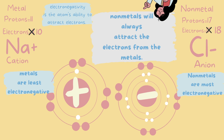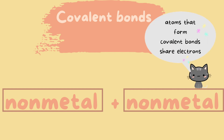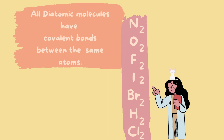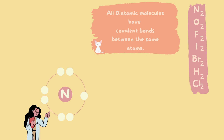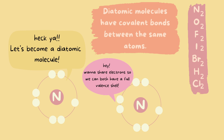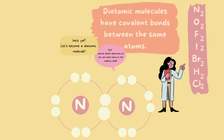Now let's move on to covalent bonds. Here we work with two non-metals bonding together. Atoms that form covalent bonds share electrons — there is no transferring of electrons here. One atom is not going to lose or gain electrons; instead, they share them. One important thing to remember is that all diatomic molecules have covalent bonds between the same atoms. For example, here we have nitrogen, and another nitrogen comes along — they come together, become diatomic molecules, and form a covalent bond.